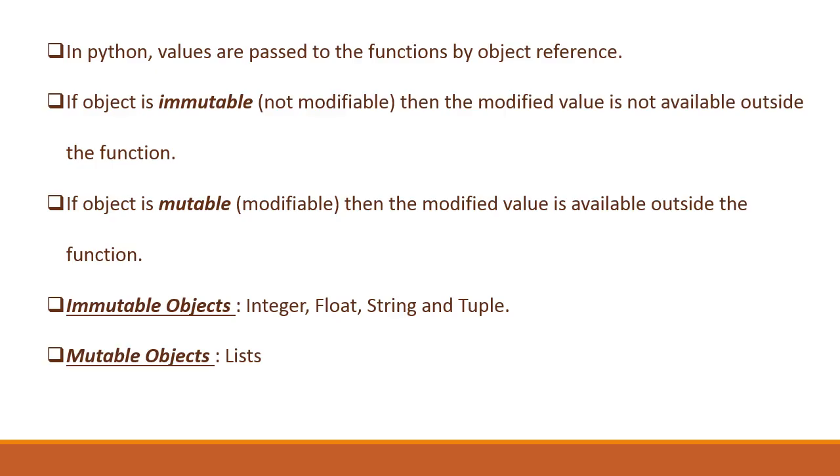In Python programming language, values are passed to functions by object reference. As we have already seen in other programming languages like C, C++, Java, we have pass by value or pass by reference.